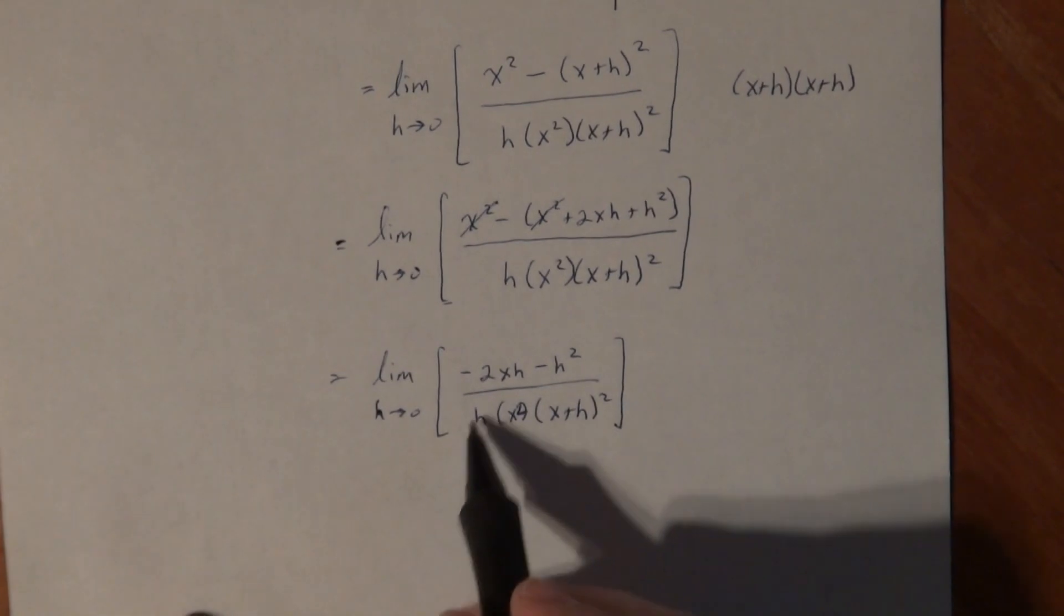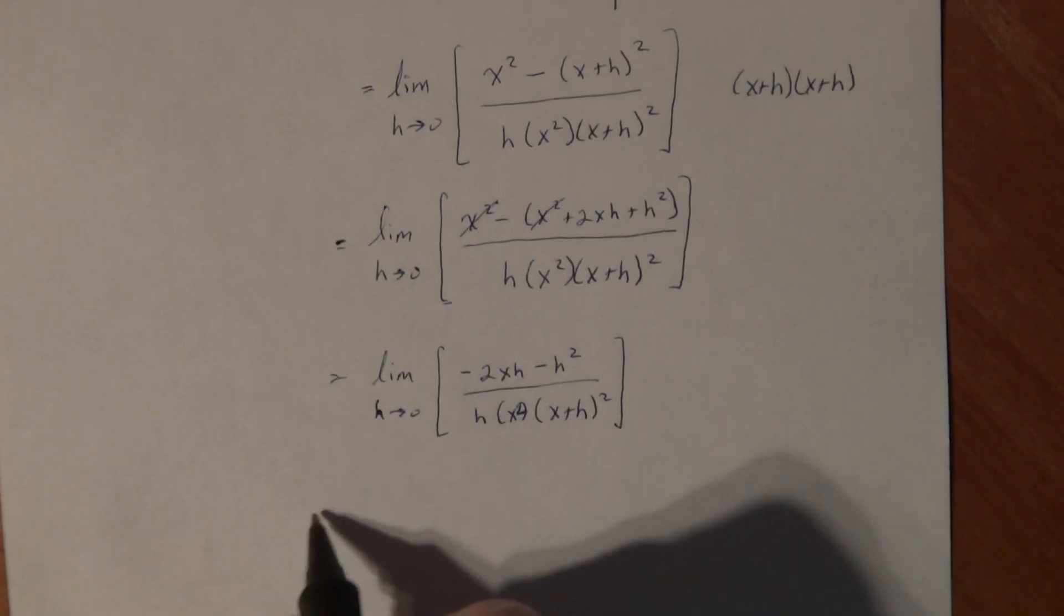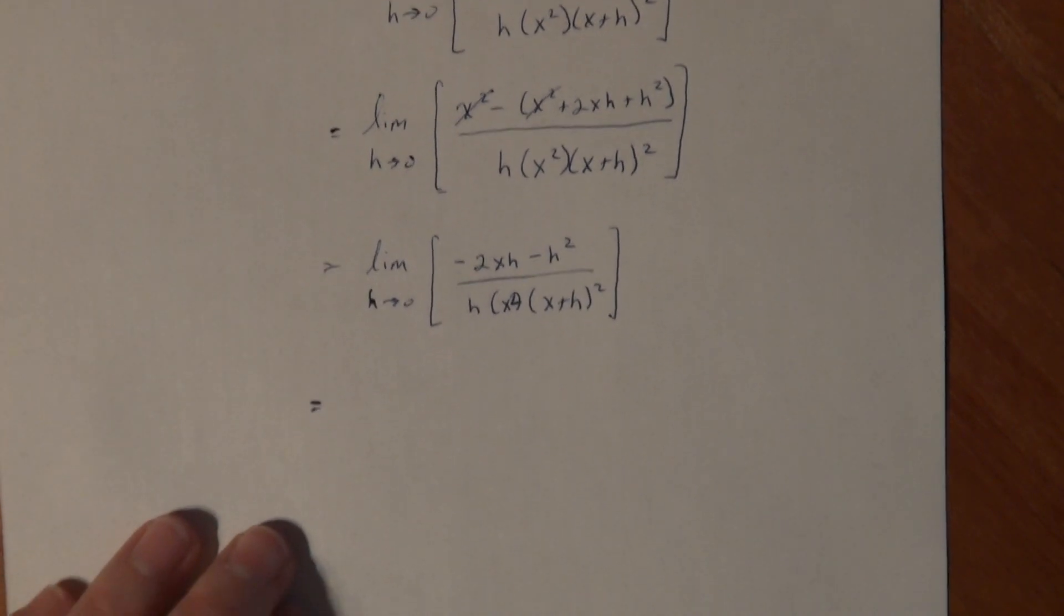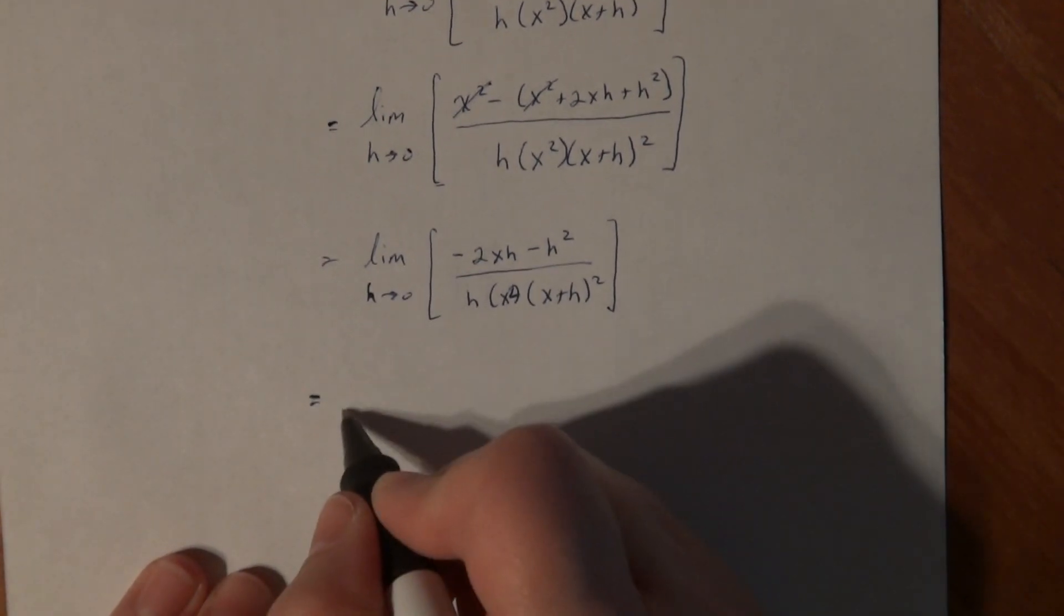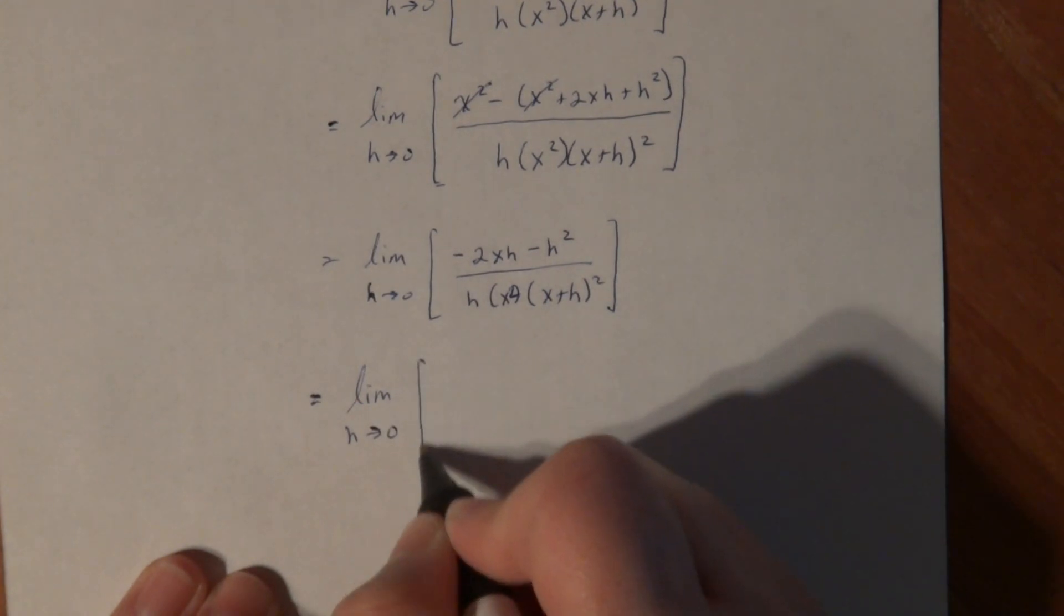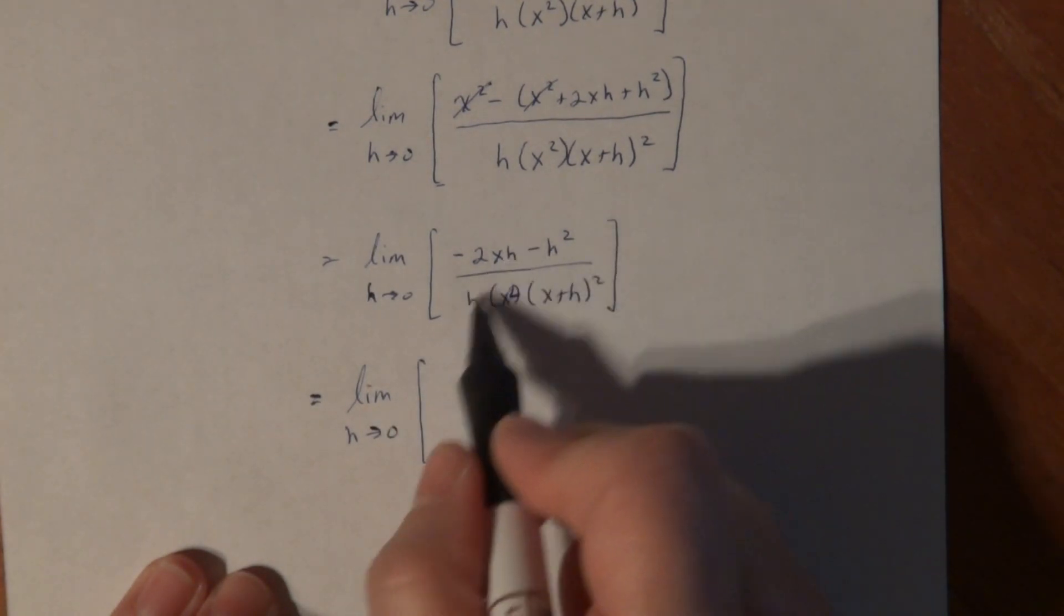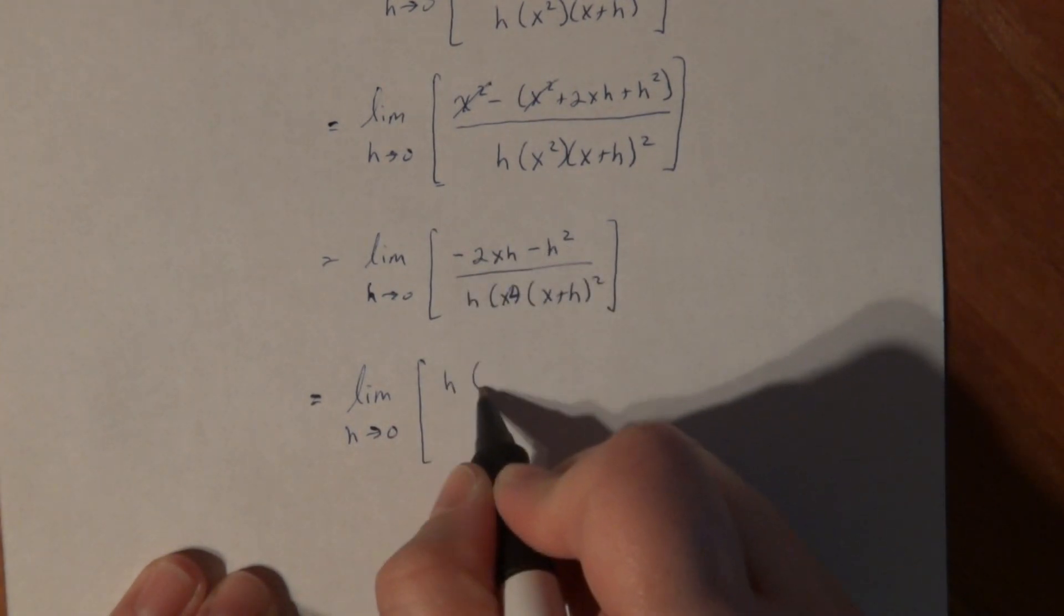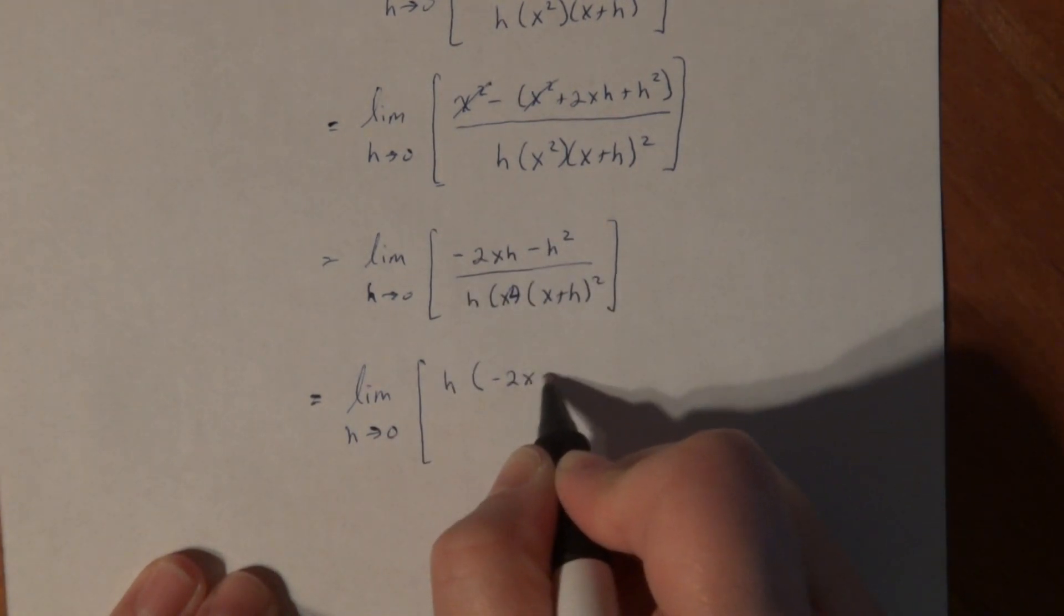Again, I still don't quite get rid of this, so I'm going to go ahead and factor out an h out of the numerator. Please don't just cancel unless you factor something out. You can't cancel that h with that h unless you can factor out an h out of both of those. So I factor out an h: minus 2x minus h.